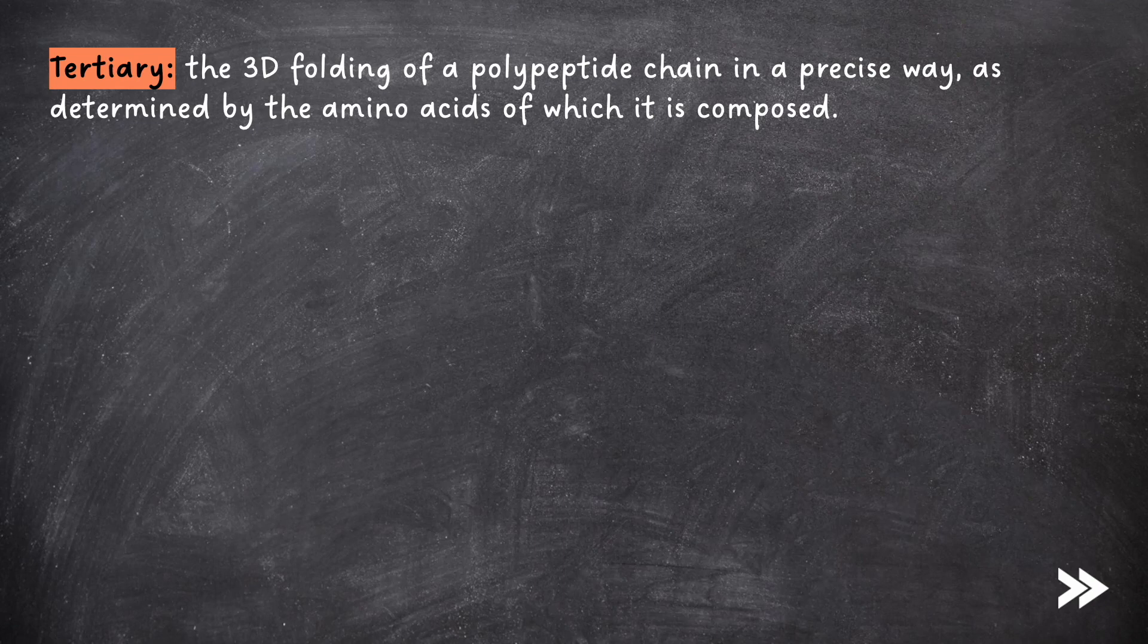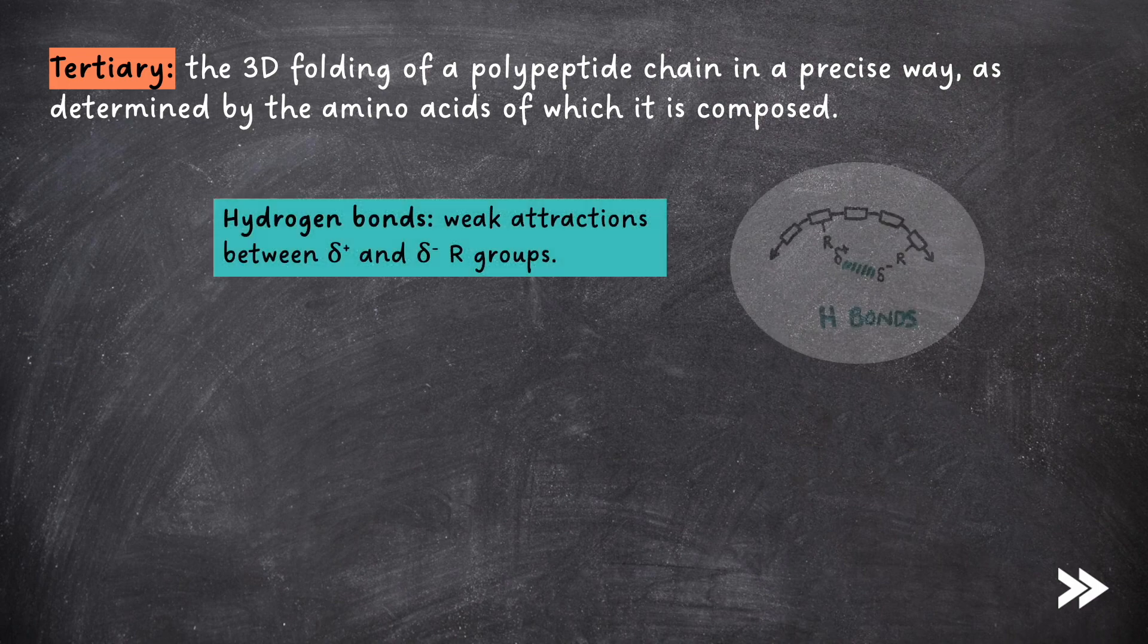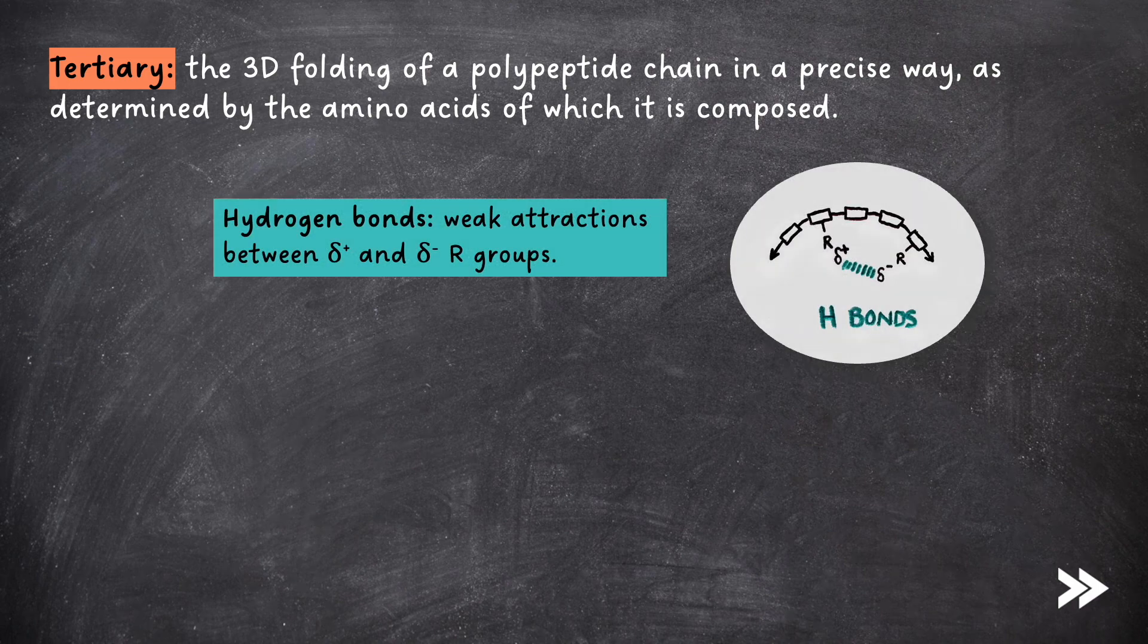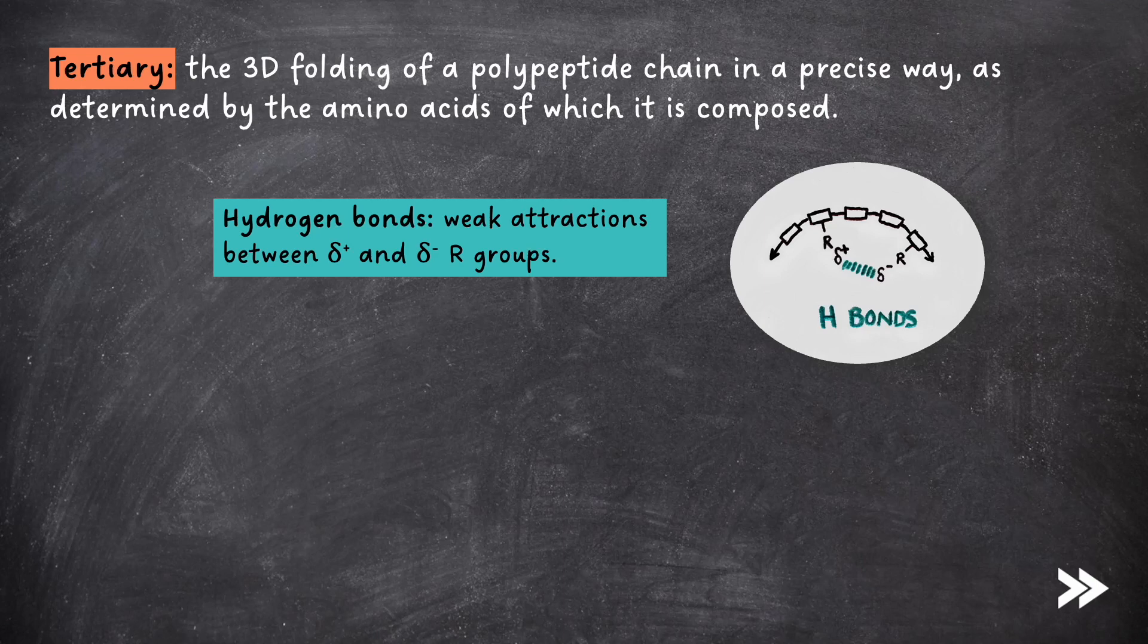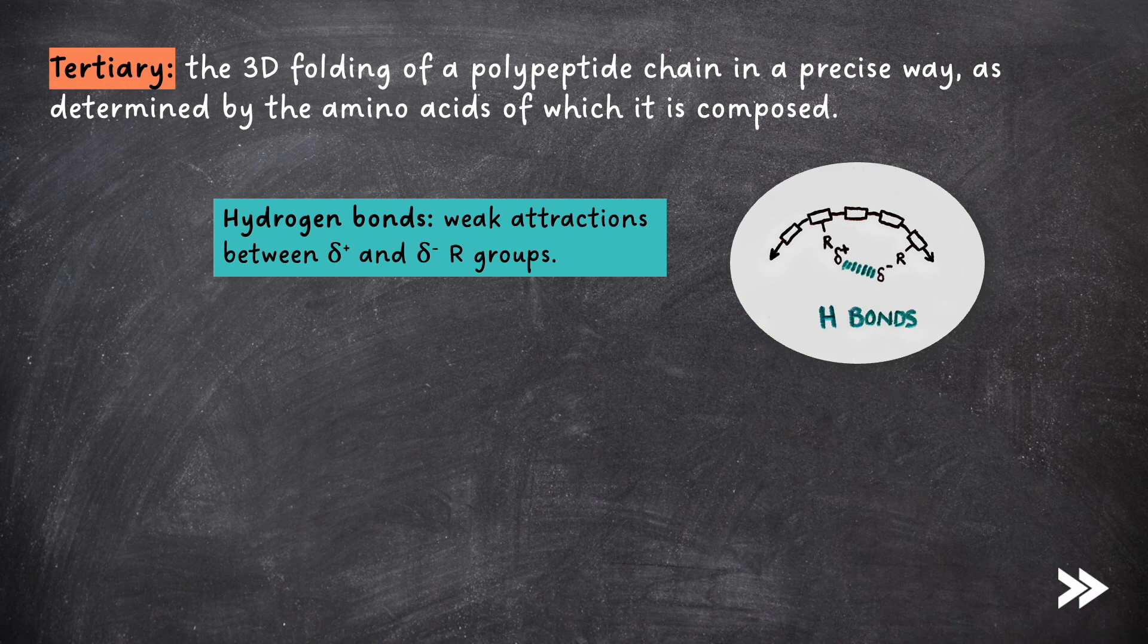Three types of bonds determine the tertiary structure. First, we have hydrogen bonds, which are weaker attractions between delta-positive and delta-negative R groups. The delta means that it is only a partial charge, as opposed to a full charge, which you get with ionic bonds.